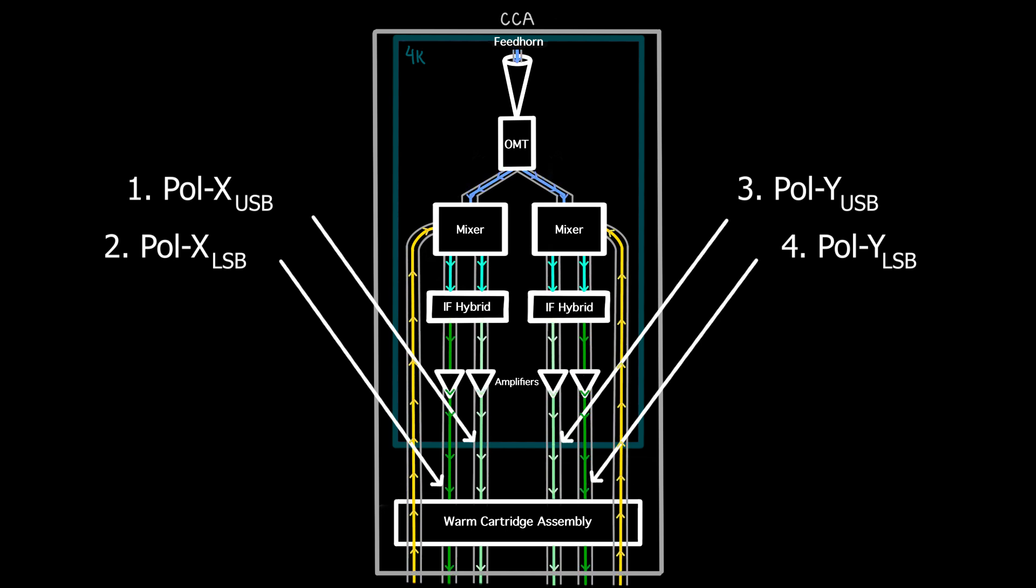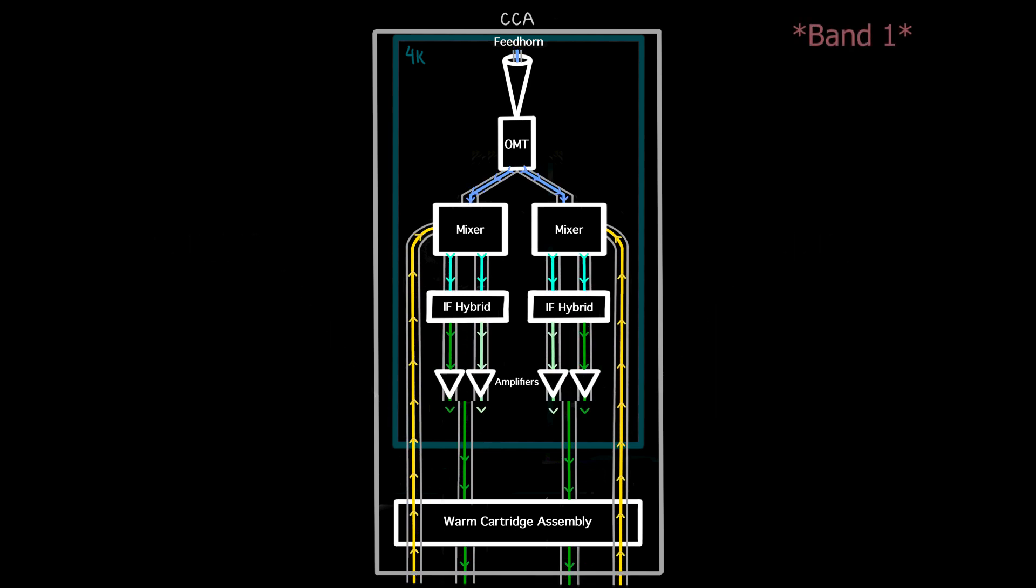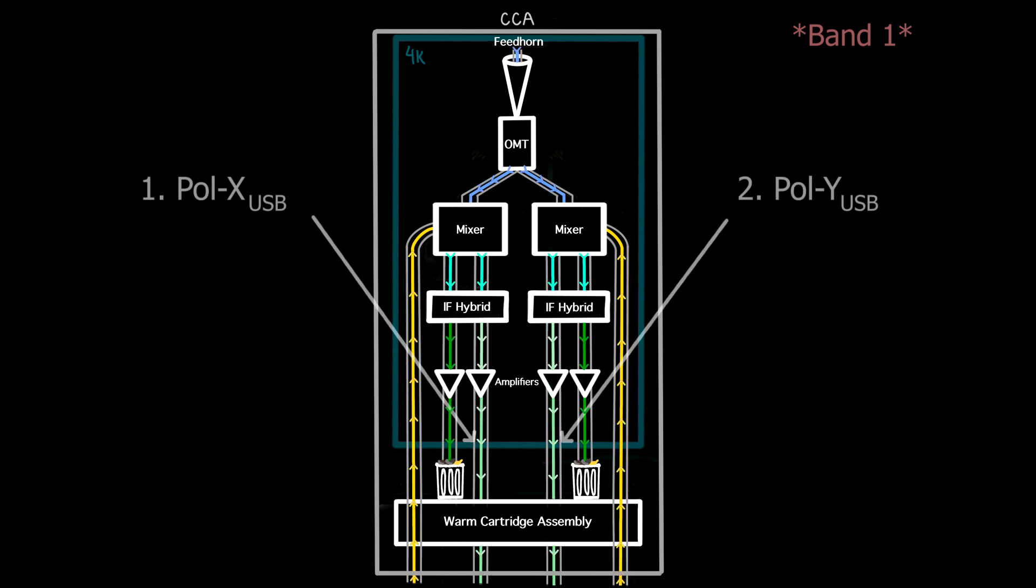We now have four independent signals with two orthogonal polarizations and an upper and lower sideband signal from each polarization. Some ALMA receivers, notably bands 9 and 10, do not split the upper and lower sidebands into separate signals. And in band 1, the lower sideband is discarded, leaving only the upper.